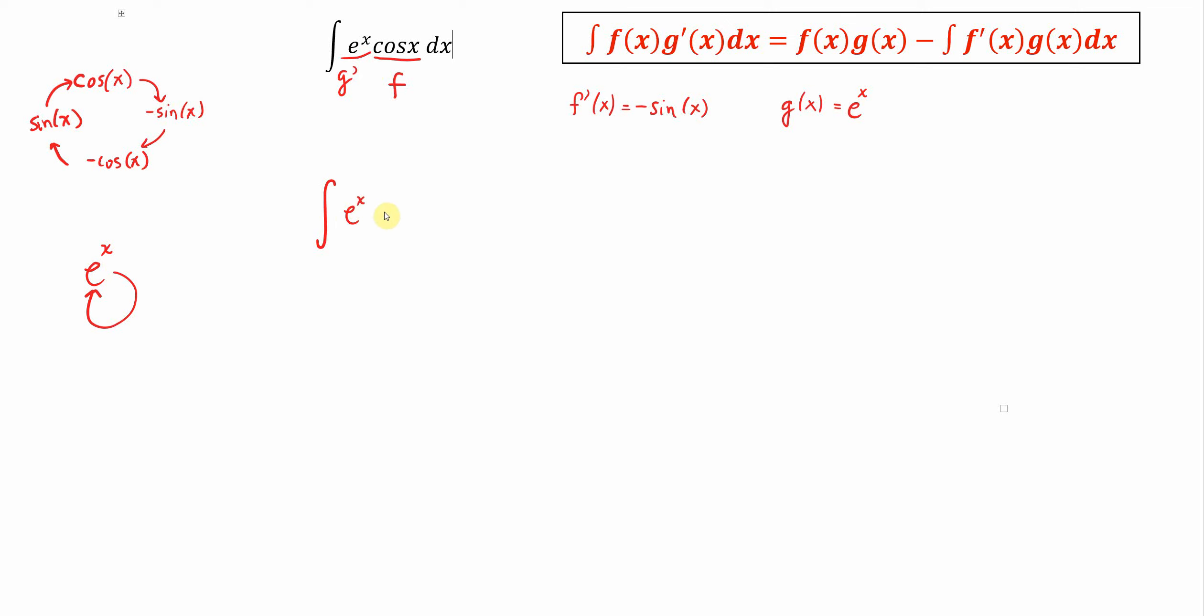The anti-derivative of e to the x cosine of x dx is equal to f times g. So f is cosine times g, which is e to the x, minus the anti-derivative of f prime, which is negative sine, times g, which is e to the x dx. Now you can see here that we're going to have to continue with our integration by parts.